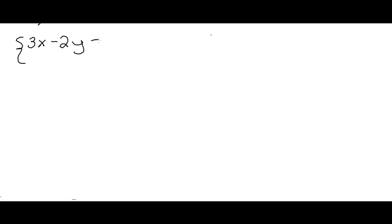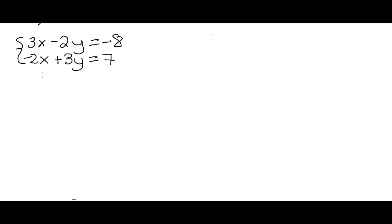Our next example: we have 3x minus 2y equals negative 8, and negative 2x plus 3y equals 7. Our goal for the elimination method is to add these two equations together in such a way that one of the variables goes away. But if I add these together, I get x because 3x minus 2x is just x, and I get y because negative 2y plus 3y is just y, with negative 1 on the right-hand side. That doesn't help us because we still have two variables.